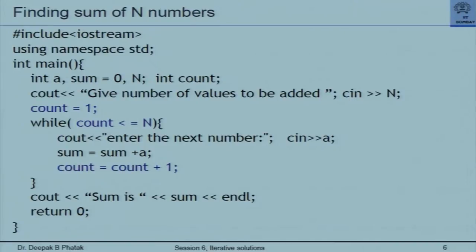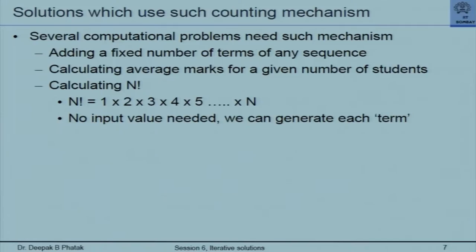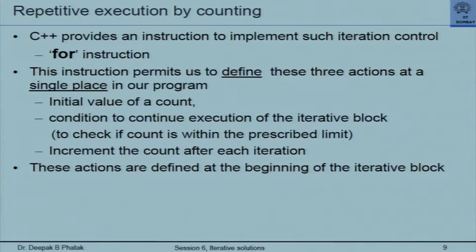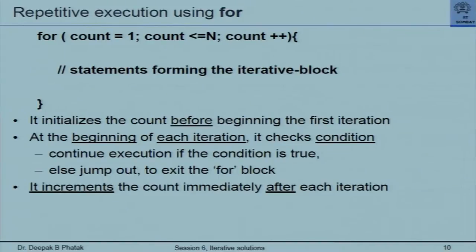When you use a while loop, you just have a single condition that is checked. However, by appropriately putting that condition, doing an initialization before the loop and incrementing the count within the loop, you effectively get a motivation for the for-type of iteration. Then the standard program is given. A factorial N problem is solved iteratively — this again is a standard program. The for instruction permits us to define all three actions related to control of that loop in one place.